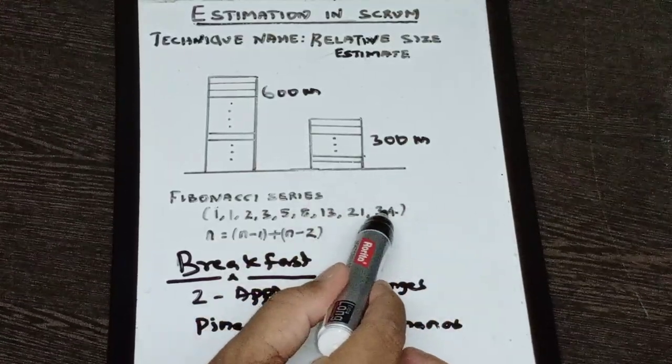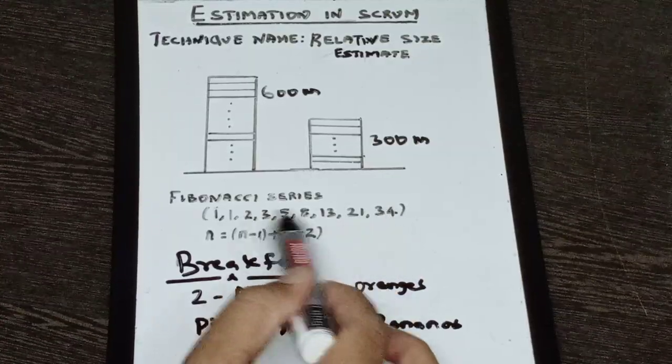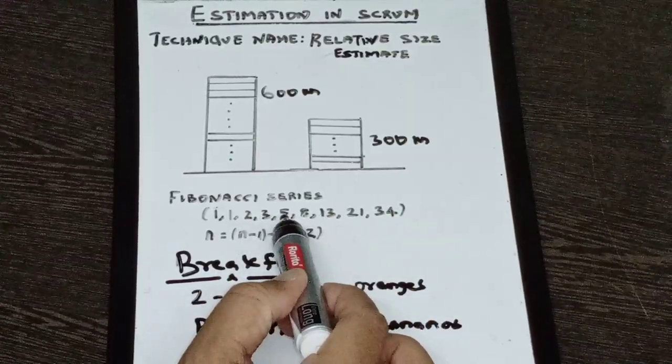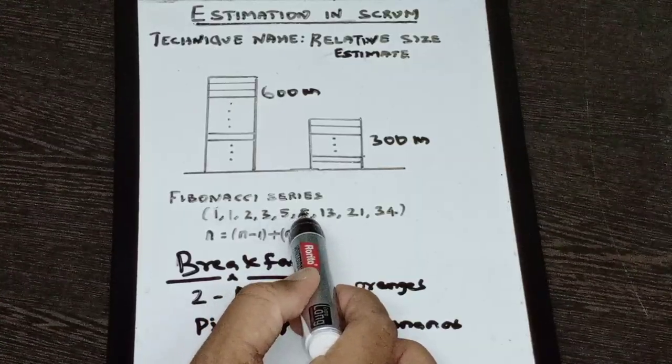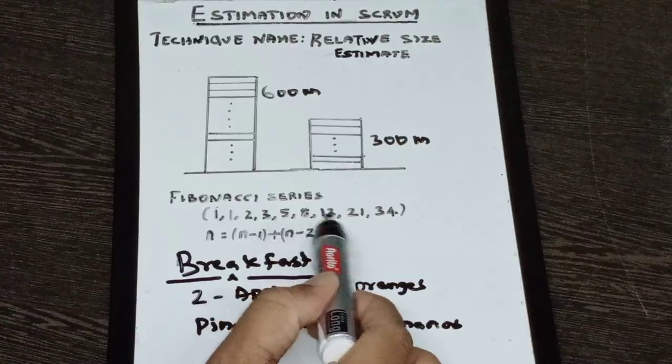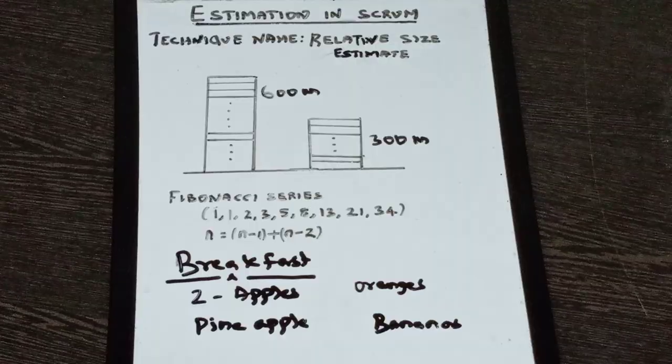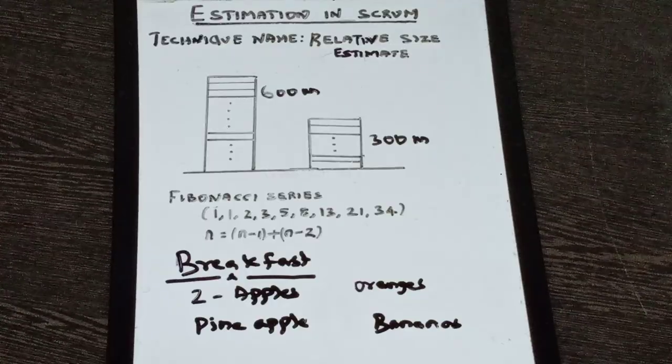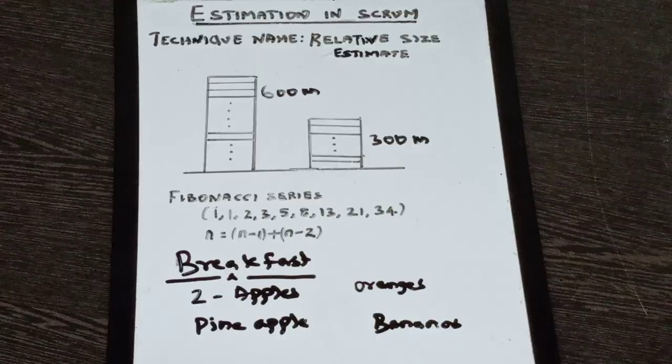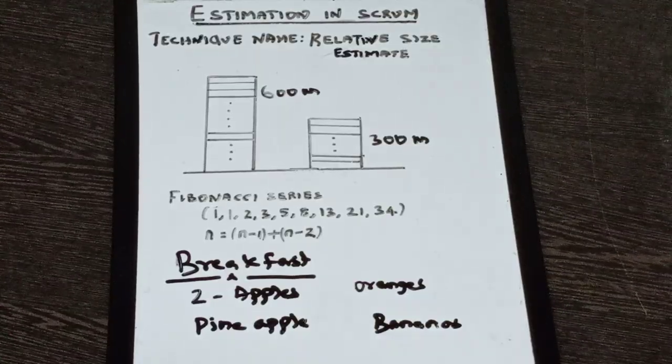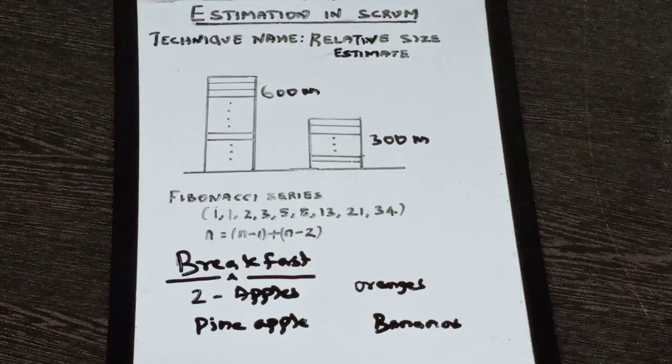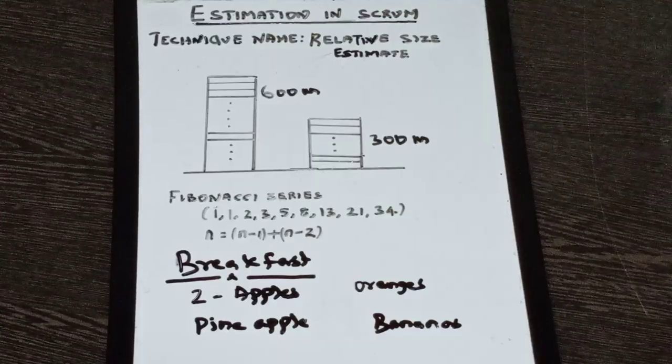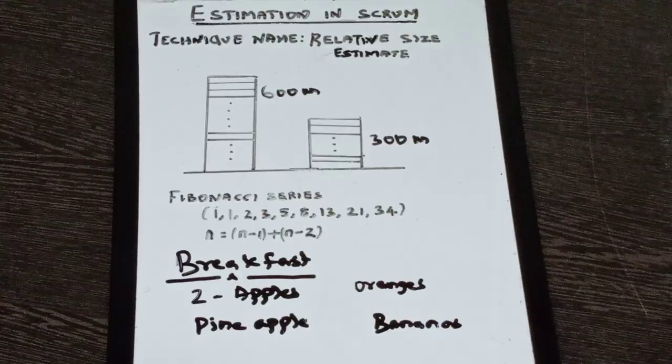But I think you can do pretty any large project estimates with 1 to 34 scale. And if you observe the Fibonacci series as the number of the series progresses, the difference between each previous number and the current number becomes more larger and wider. And why we need this—because it helps us discriminating the estimates very clearly. If you use a linear scale of 1, 2, 3, 4, 5, 6, 7, 8, 9, 10, it becomes very difficult. If someone gives an estimate of 7, another one gives 8, it becomes very difficult to differentiate what is between 7 and 8. But whereas in Fibonacci series, as the series progresses, the difference becomes more wider. That helps us differentiating the estimate very clearly.